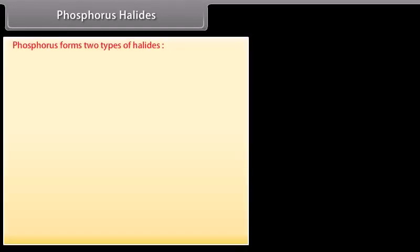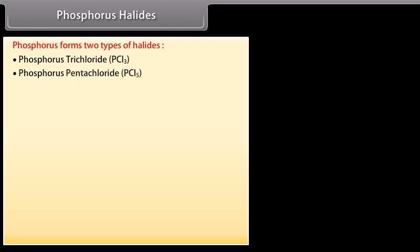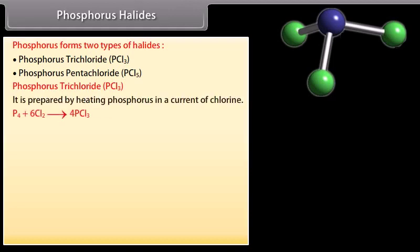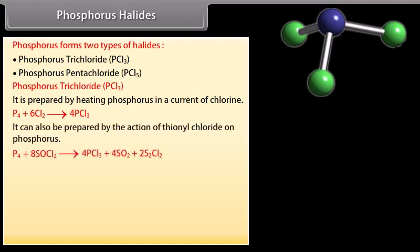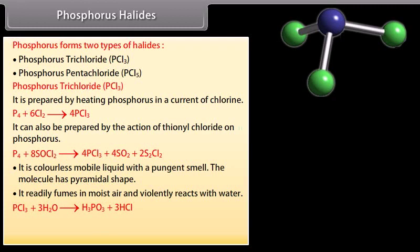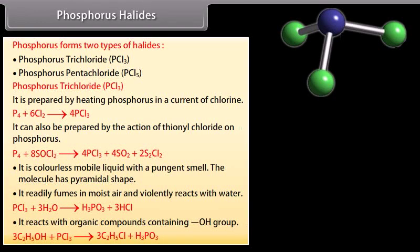Phosphorus forms two types of halides: phosphorus trichloride (PCl3) and phosphorus pentachloride (PCl5). PCl3 is prepared by heating phosphorus in a current of chlorine, or by the action of thionyl chloride on phosphorus. It is a colourless mobile liquid with a pungent smell; the molecule has a pyramidal shape. It readily fumes in moist air and violently reacts with water. It reacts with organic compounds containing an OH group.